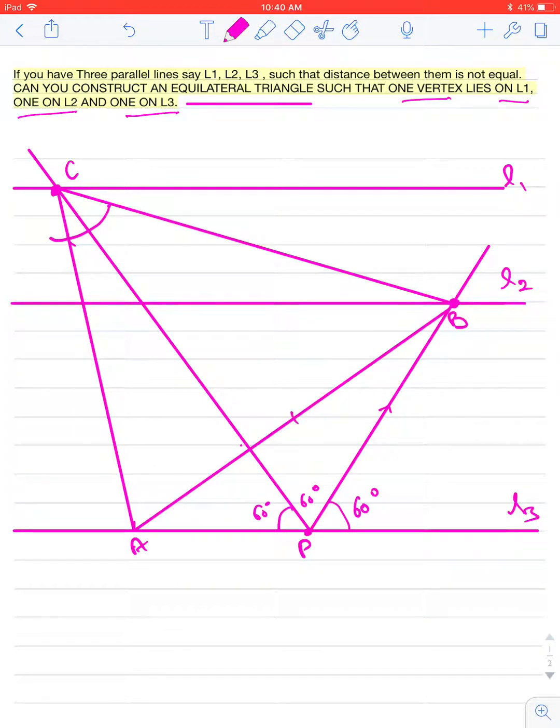Our claim is, this triangle ABC is the required equilateral triangle. For justification, you can see here: